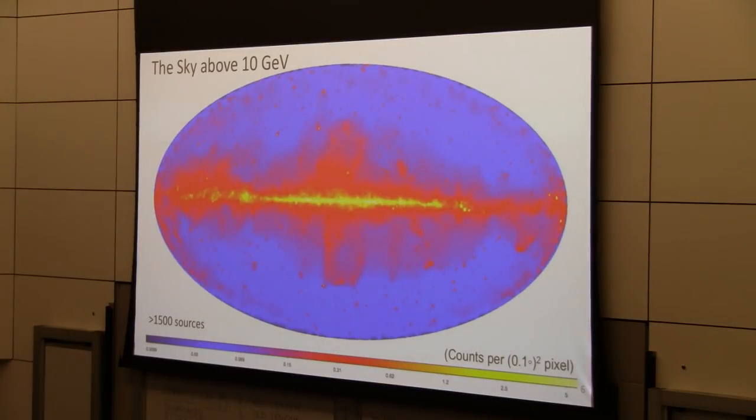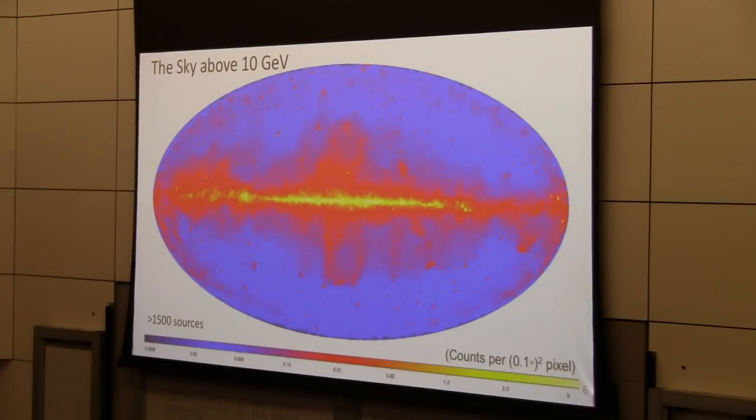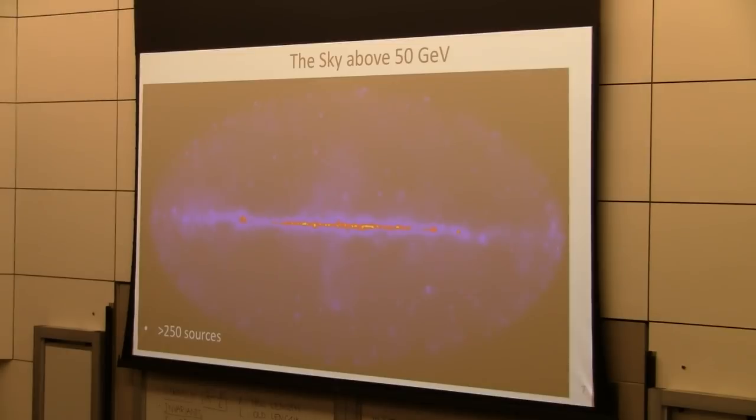The broad energy range of Fermi LAT allows us to make maps at different energies. If we go from 1 GeV to 10 GeV, you can see some of the sources will disappear and some will appear. You can see now the emergence of two large lobes of emission above and below the galactic center. And if we go to even higher energies and make a map of the sky above 50 GeV, this map is particularly relevant as a finding chart for the narrow field ground-based instruments.